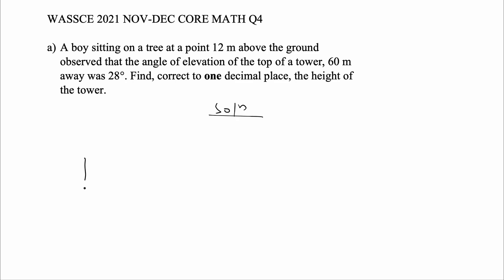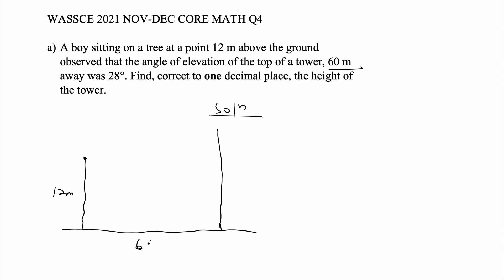So this would be our tree, and the boy is here; this would be our tower. From the question, the tree is 12 meters above the ground, so the height of the tree will be 12 meters. The distance from the tower to the tree is 60 meters. The angle of elevation of the top of the tower — from the boy's normal eye view — is 28 degrees.